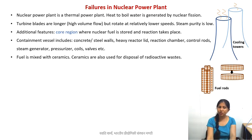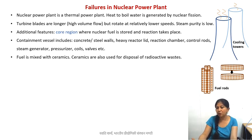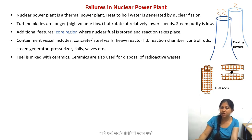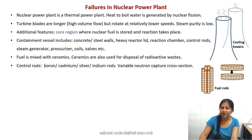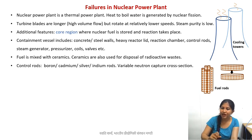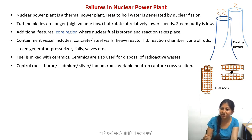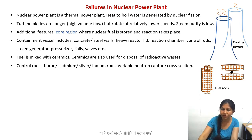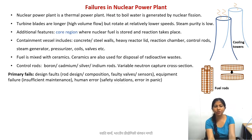The fuel is mixed with ceramics, and some types of ceramics are also used for the disposal or storage of radioactive waste. All of these ceramics together are sometimes called nuclear ceramics. Control rods are made of materials like boron, cadmium, silver, and indium — these materials can absorb neutrons of different energies depending on their neutron capture cross-section — so you typically use a mixture of these metals to make the control rods.